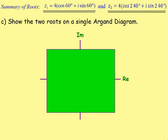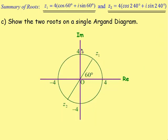For part C, the roots lie evenly spaced on a circle of radius 4, passing through 4 and -4. Mark the first root at 60° and the second at 240°. Since the Argand diagram uses angles from 0 to ±180°, 240° is equivalent to 240 - 360 = -120°, so that root lies at -120° on the diagram.